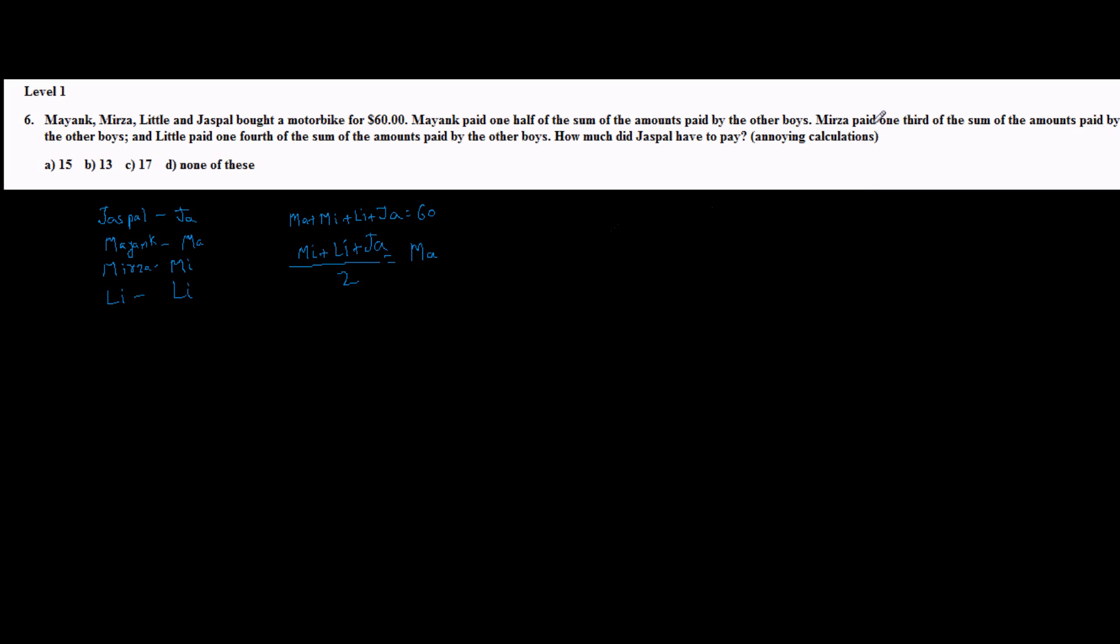Similarly, Mirza paid one third of the sum of amount paid by other boys. So other boys in this case are Mayank, Little and Jaspal, and Mirza paid one third of their amount. So one third of sum of other boys' amount is equal to Mirza's amount. Then they say that Little paid one fourth of the sum of the amount paid by other boys. So other boys are Mayank, Mirza and Jaspal, and Little paid one by four of these.